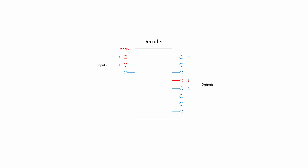If the inputs collectively represent the denary value 3, the fourth output is activated. An input of denary 4 activates the fifth output, denary 5 activates the sixth output, 6 activates the seventh, and 7 activates the eighth.